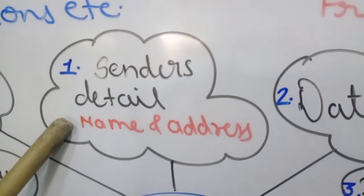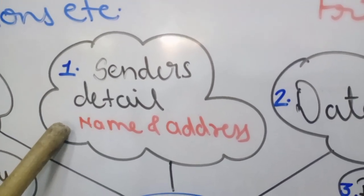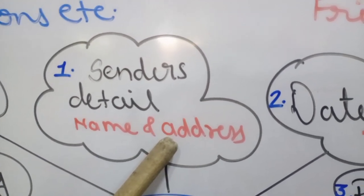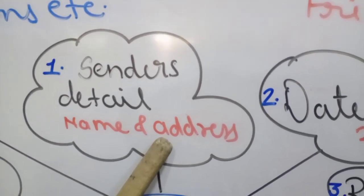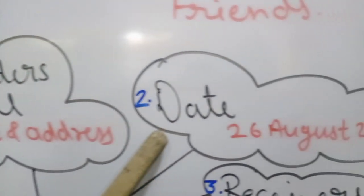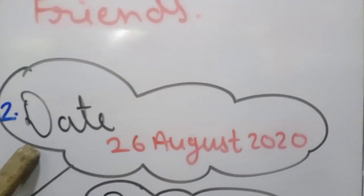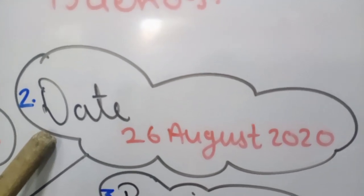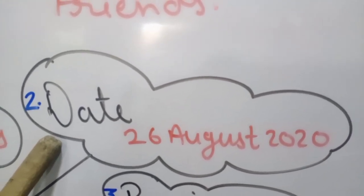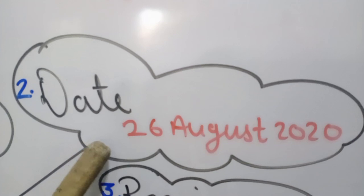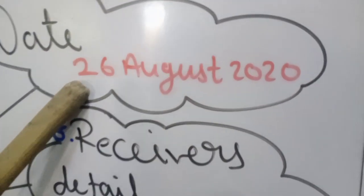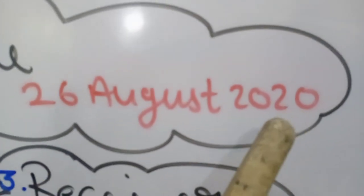In sender's detail, we have to write the name and address of the person who is writing the letter. The second element is date. After the sender's address we leave one line, then write the date. The date should be written in the form like: 26 August 2020.